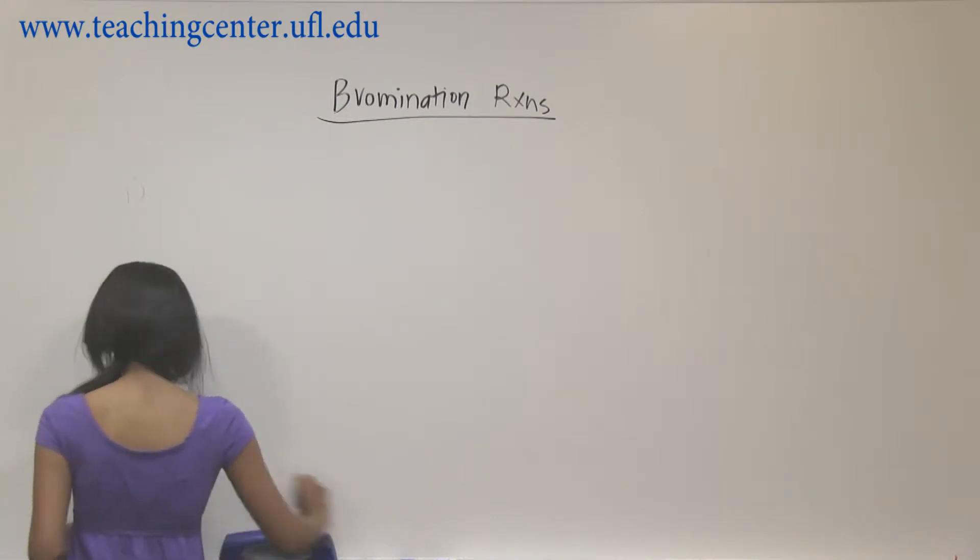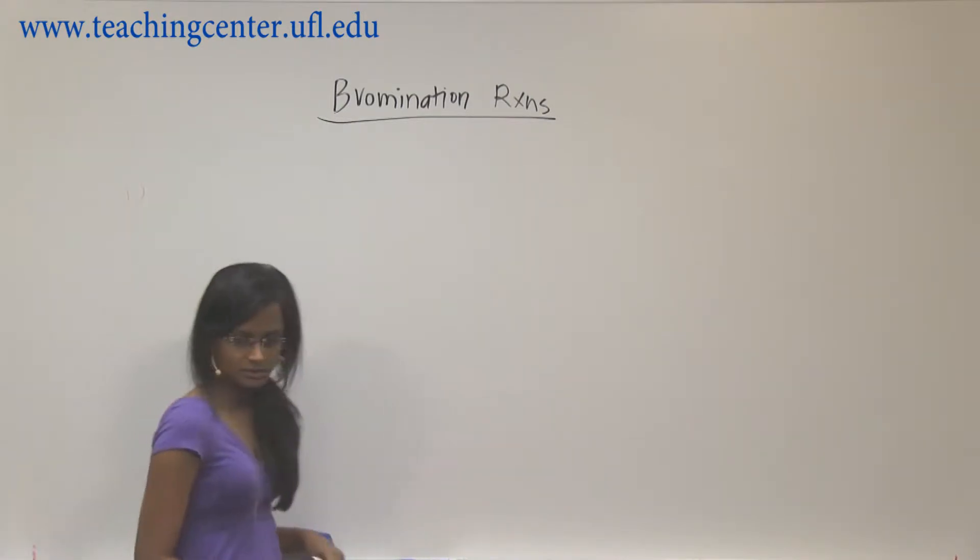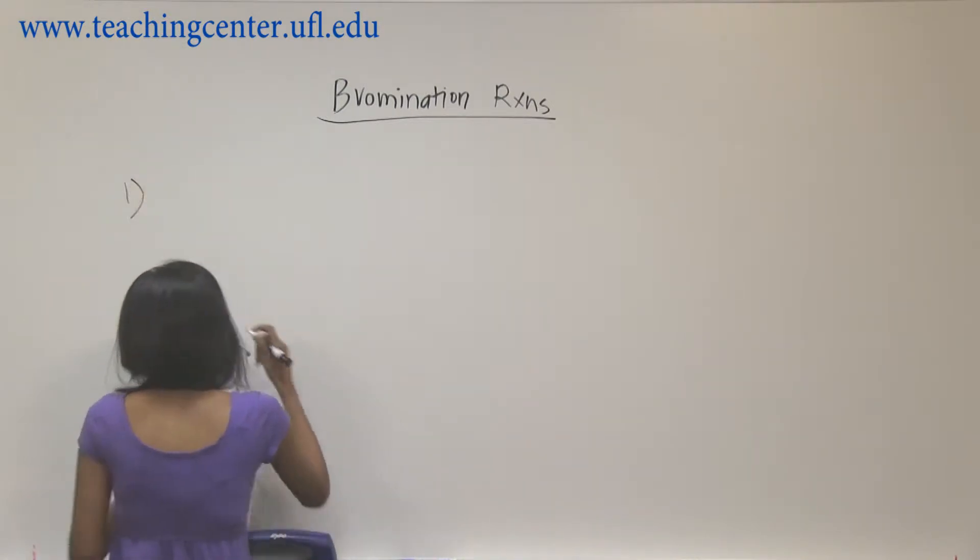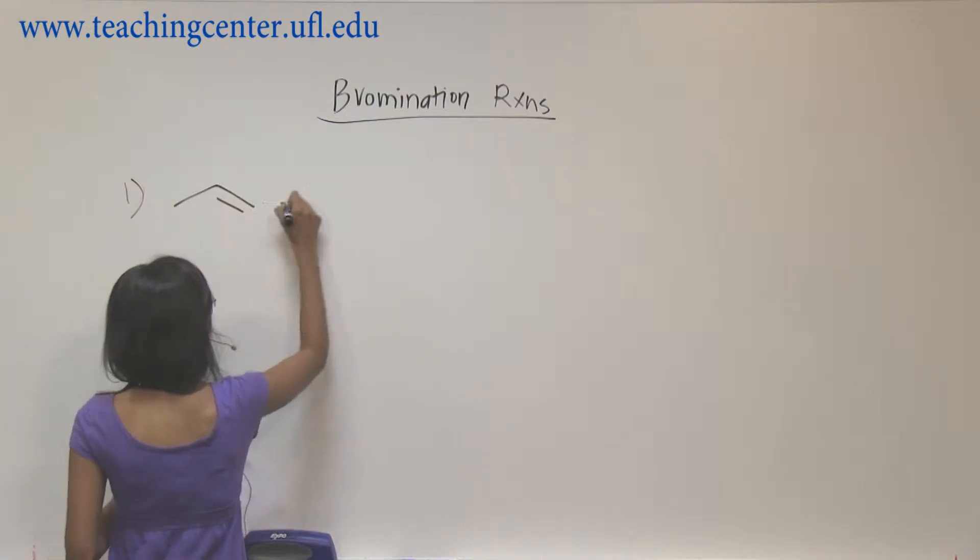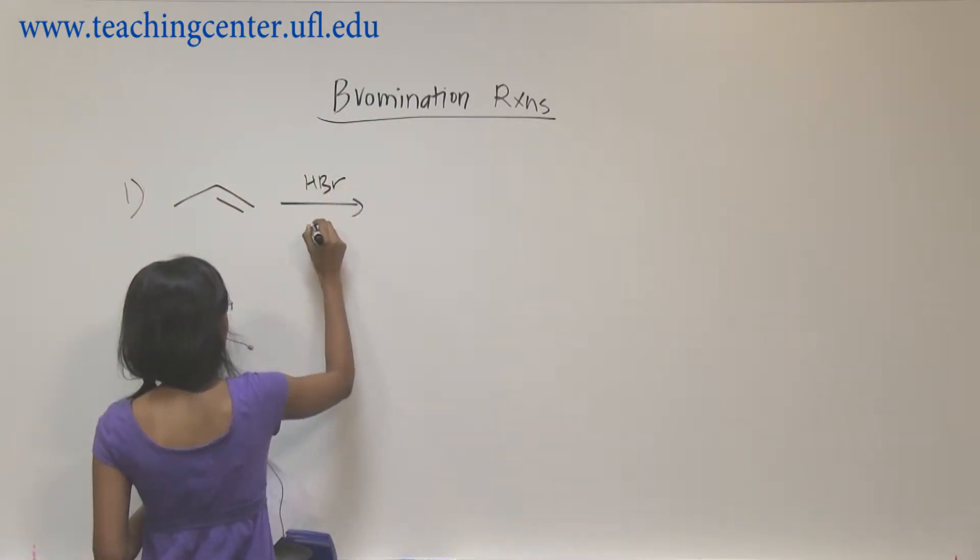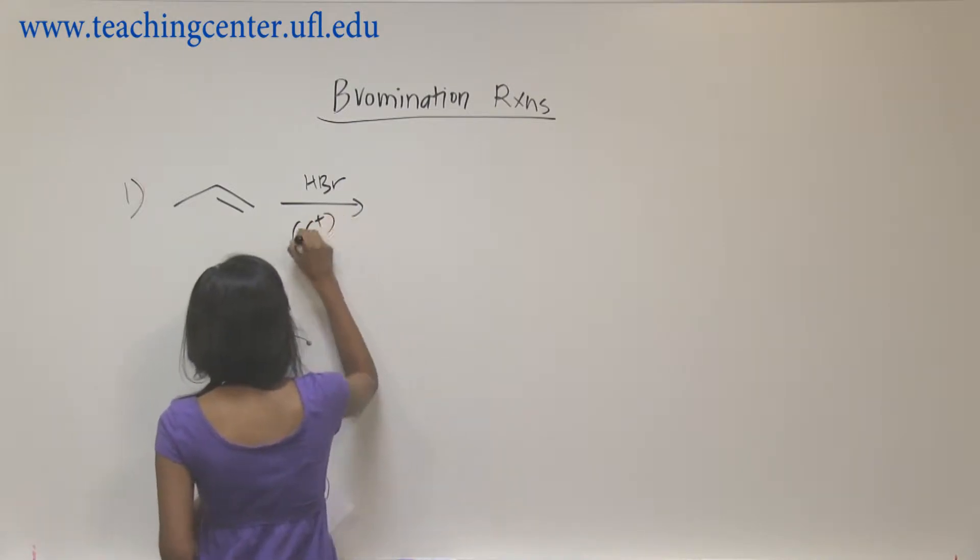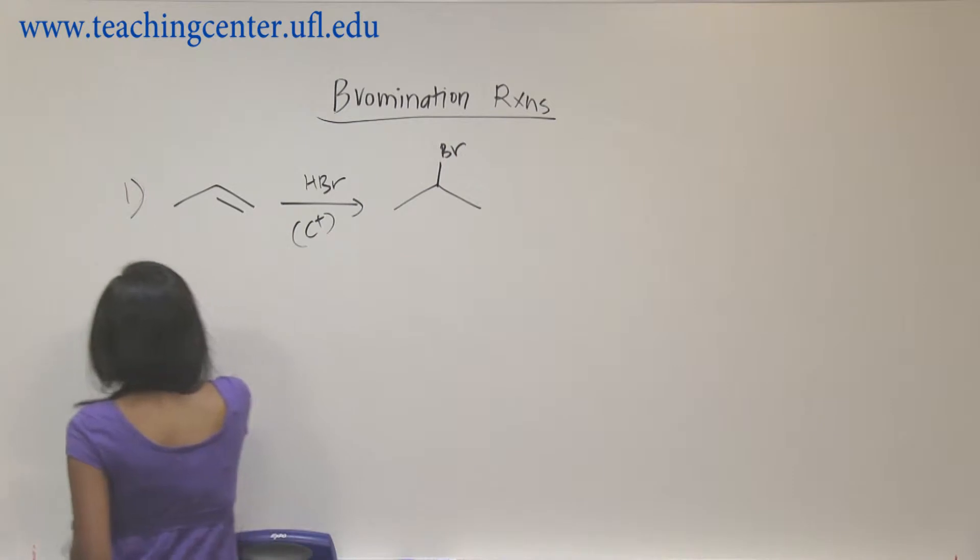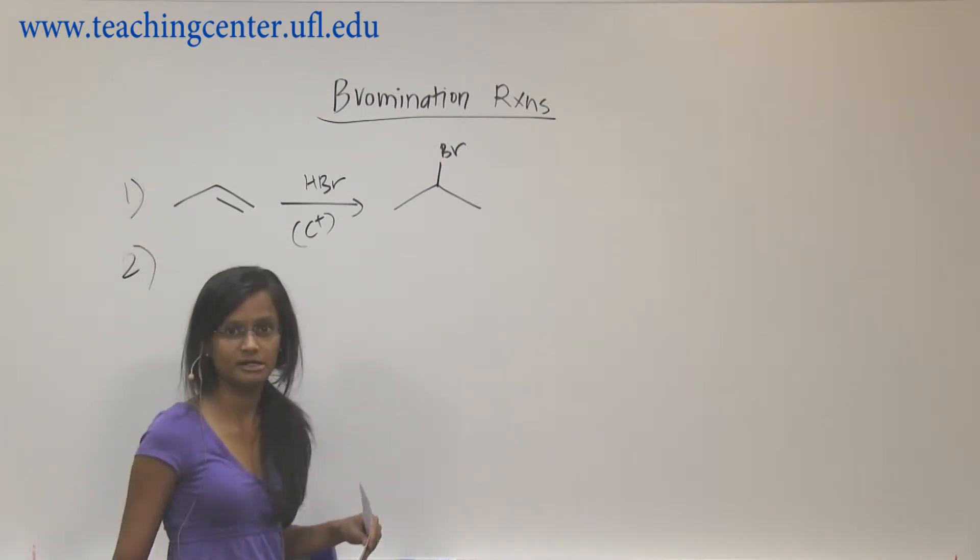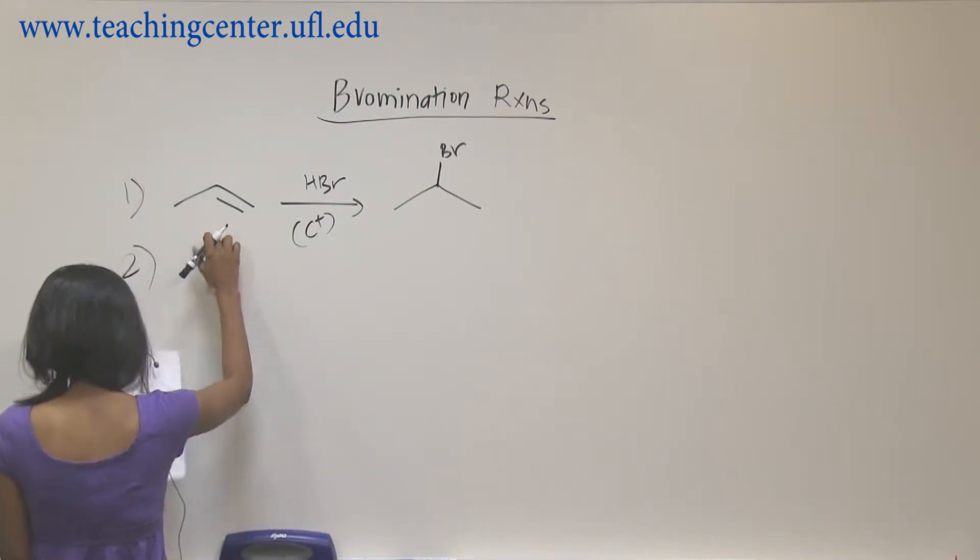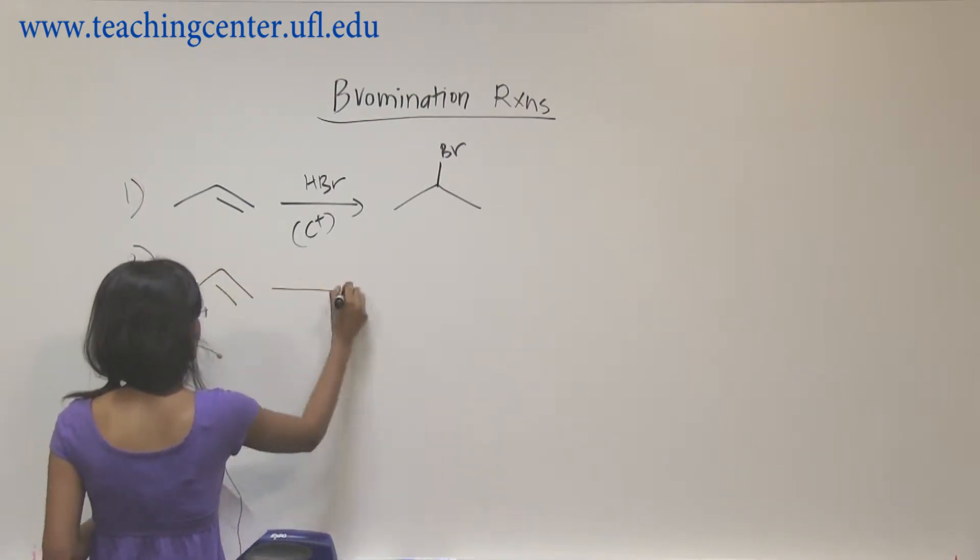The first one we're going to talk about is alkene plus HBr. This is going to be a carbocation mechanism so you would add your bromine to the most substituted side so you can get the stable carbocation. This is Markovnikov.